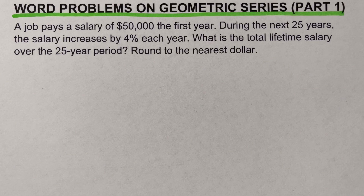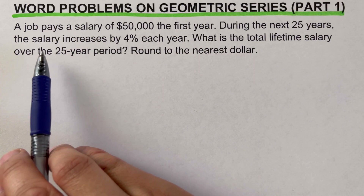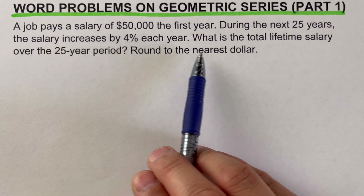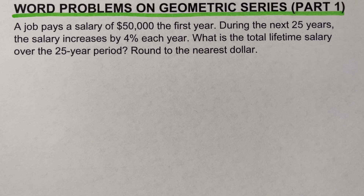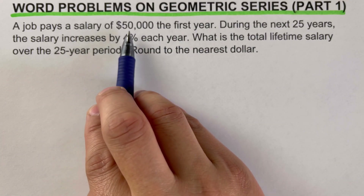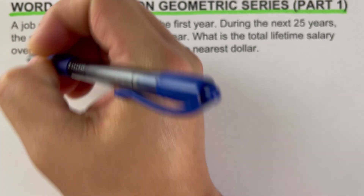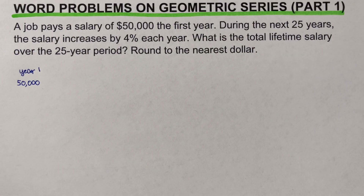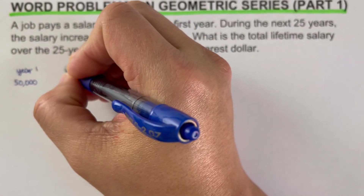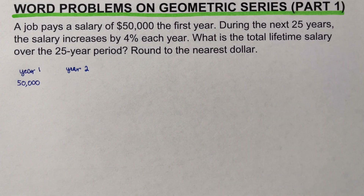Now we go over this problem: a job pays a salary of $50,000 the first year. During the next 25 years, the salary increases by 4% each year. What is the total lifetime salary over the 25-year period? Round to the nearest dollar. To better see what's going on, let's write this out. On year one, the salary is $50,000.